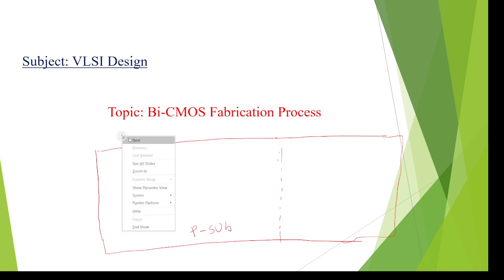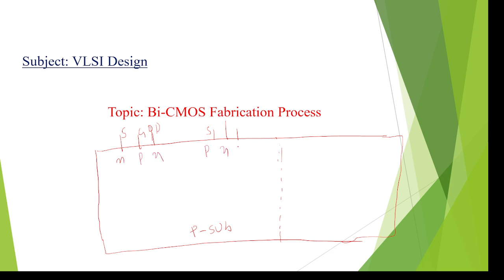On the left side area, we design the CMOS fabrication — source, gate, and drain on both sides: one for NMOS and one for PMOS transistors. On the right side area, we design the bipolar technology transistors with emitter, base, and collector terminals. So one side has CMOS transistors and the same substrate holds BJT transistors.